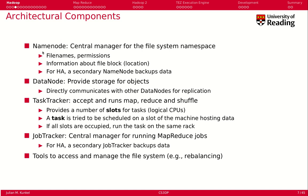The components include a namenode, which is the central manager for the file system namespace. It manages file names, permissions, and metadata, and tells you where to find the blocks of each file. There is basically only one namenode, but for high availability and fault tolerance, a secondary namenode is provided with the same information. Data nodes — of which there can be arbitrarily many — provide the storage for blocks and communicate among each other to enable replication.